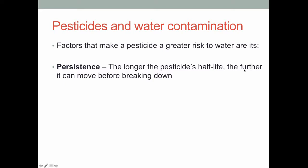As far as water contamination is concerned, a large part of what contaminates water comes down to the chemical structure of the pesticide. The first key factor is the chemical's persistence. The general idea is that the longer the pesticide's half-life, the more likely it is to turn up in water, because it can move further from the spray site through water before breaking down. A chemical with a half-life of 21 days versus 7 days gives three times greater chance of a rain or irrigation event that moves it into a water source.